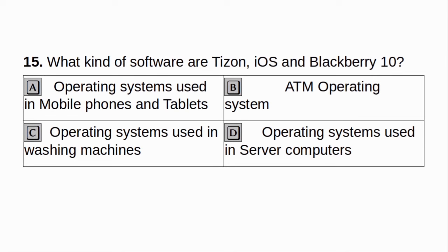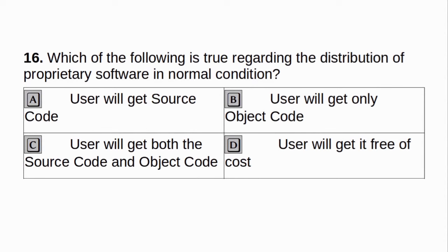What kind of software are Tizen, iOS and Blackberry 10? a. Operating system used in mobile phones and tablets. b. ATM operating system. c. Operating systems used in washing machines. d. Operating system used in server computers. Answer: a. Operating system used in mobile phones and tablets. Which of the following is true regarding the distribution of proprietary software in normal condition? Answer: b. User will get only object code.